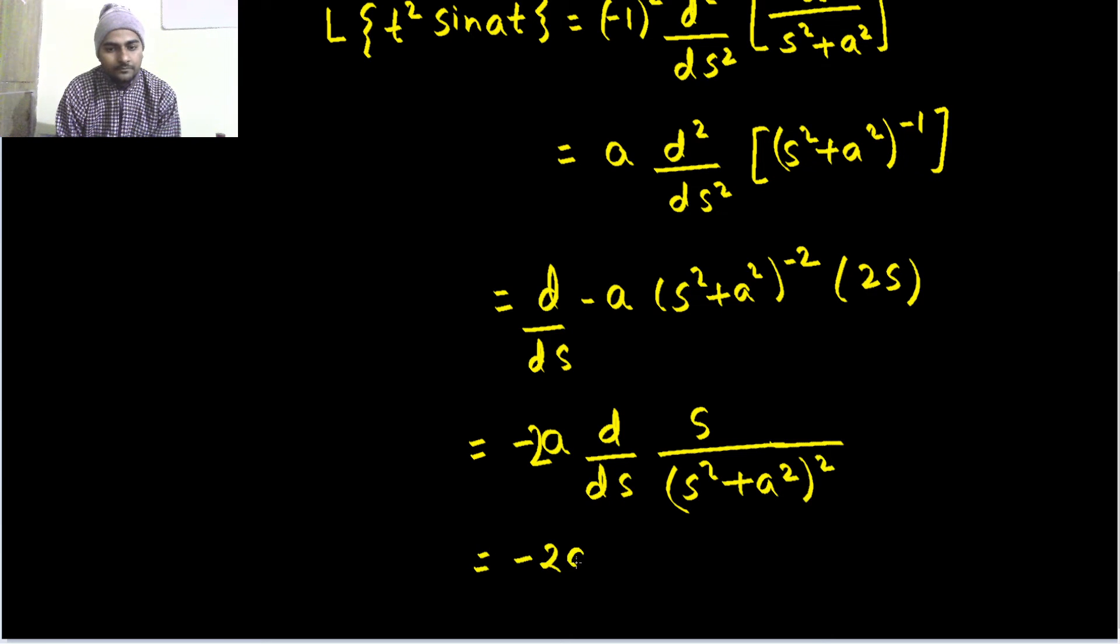So, this is, I can use the quotient rule. Power, whatever is in the denominator, that square, so power will now become 4.